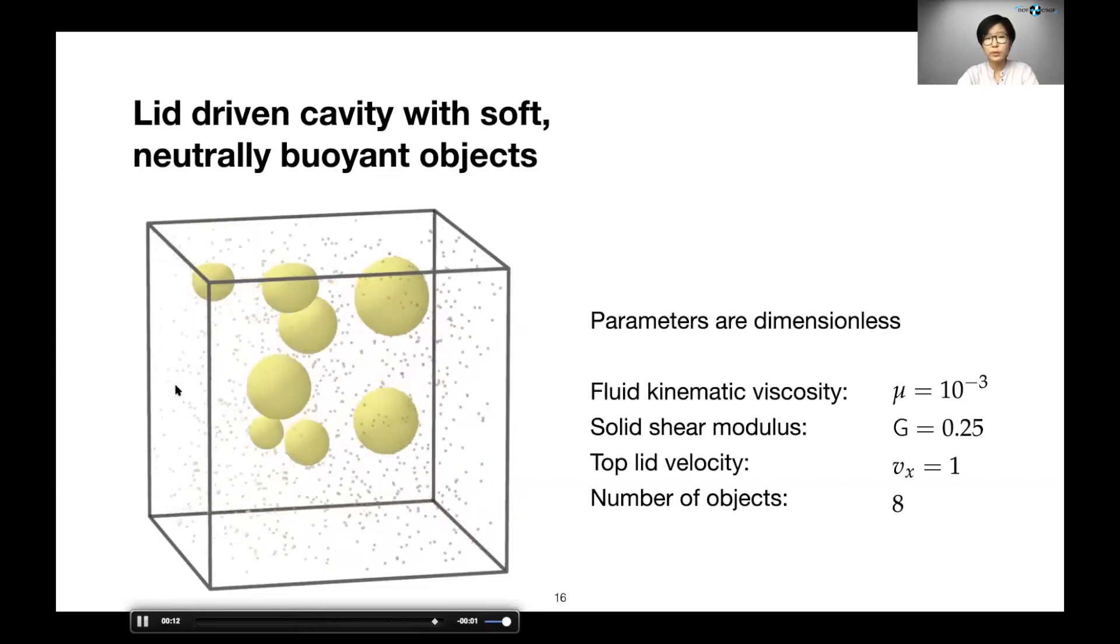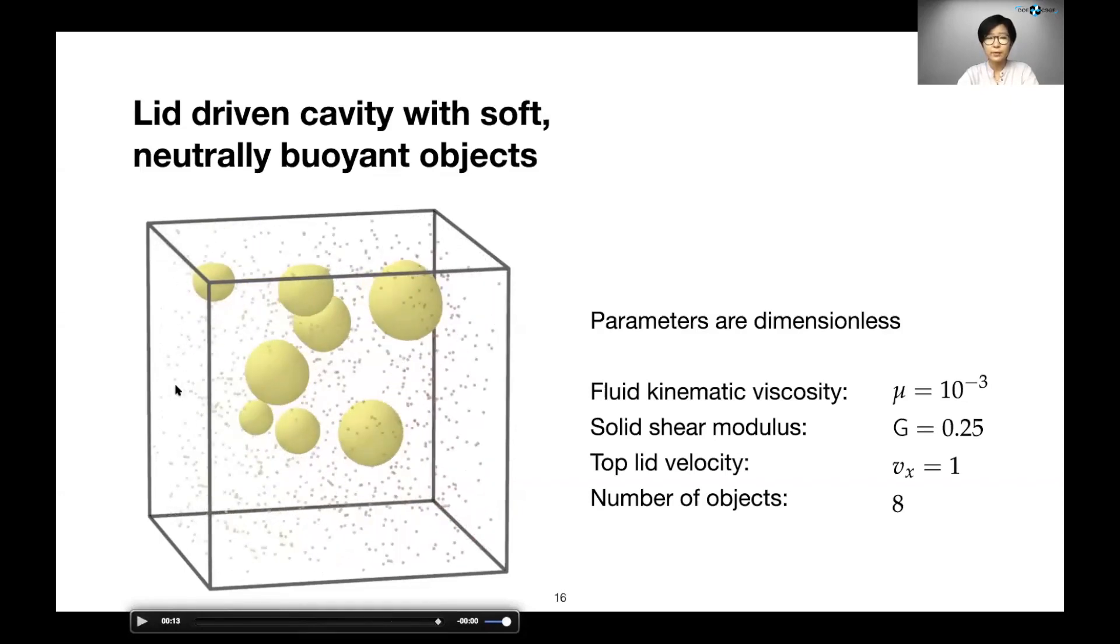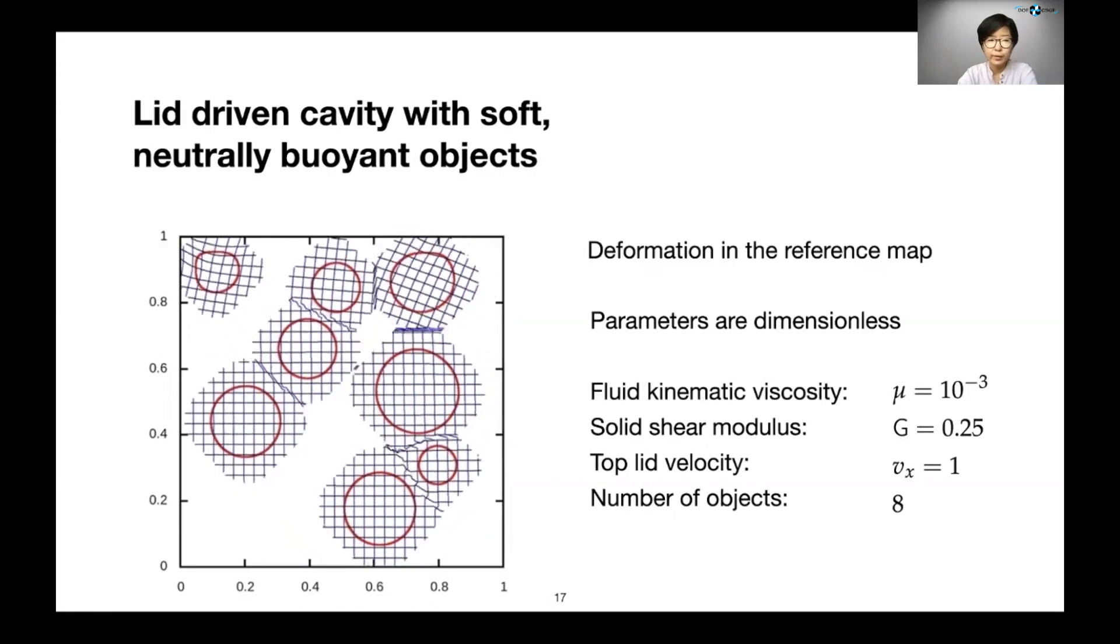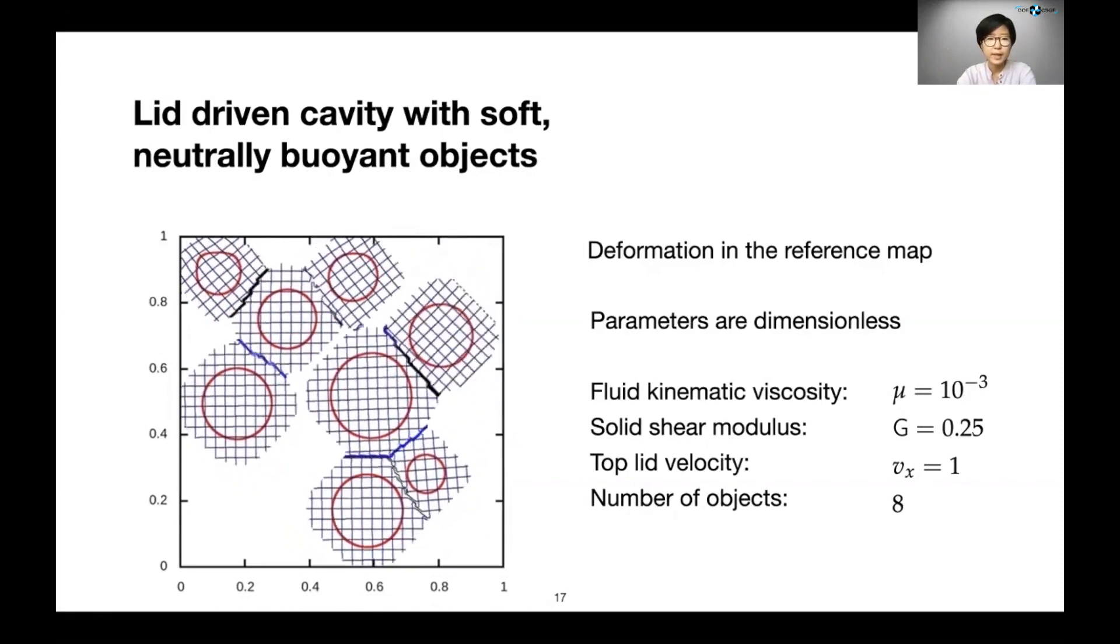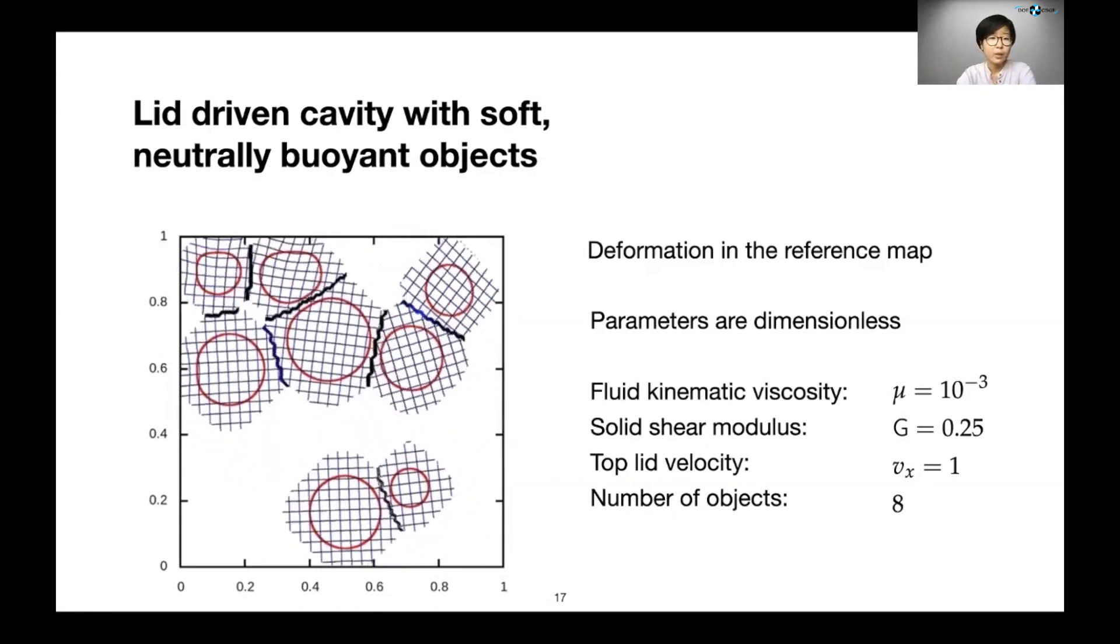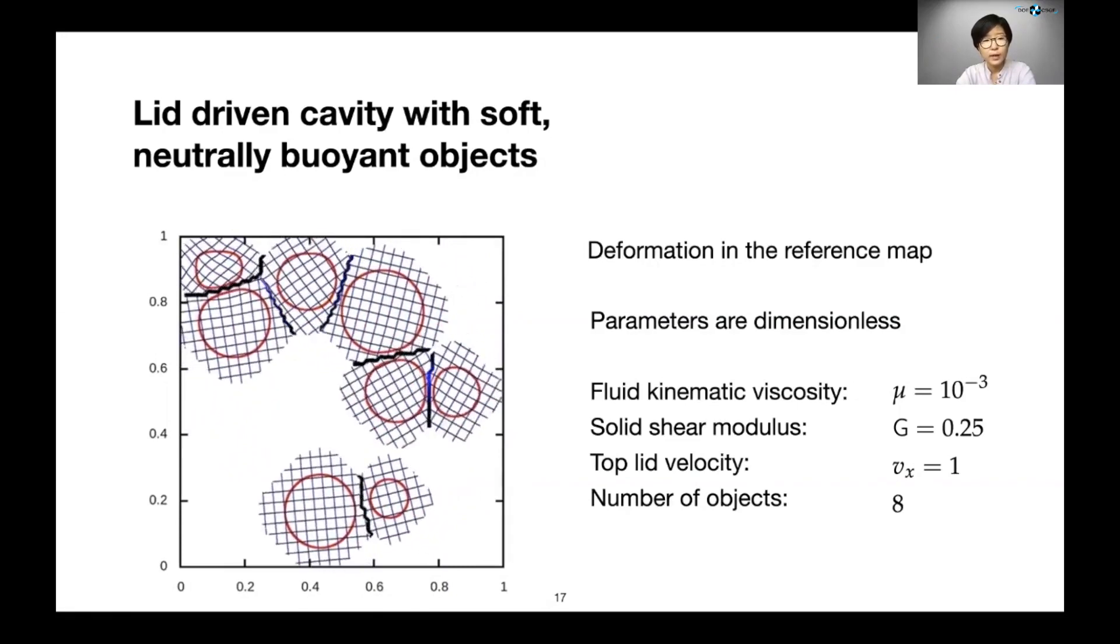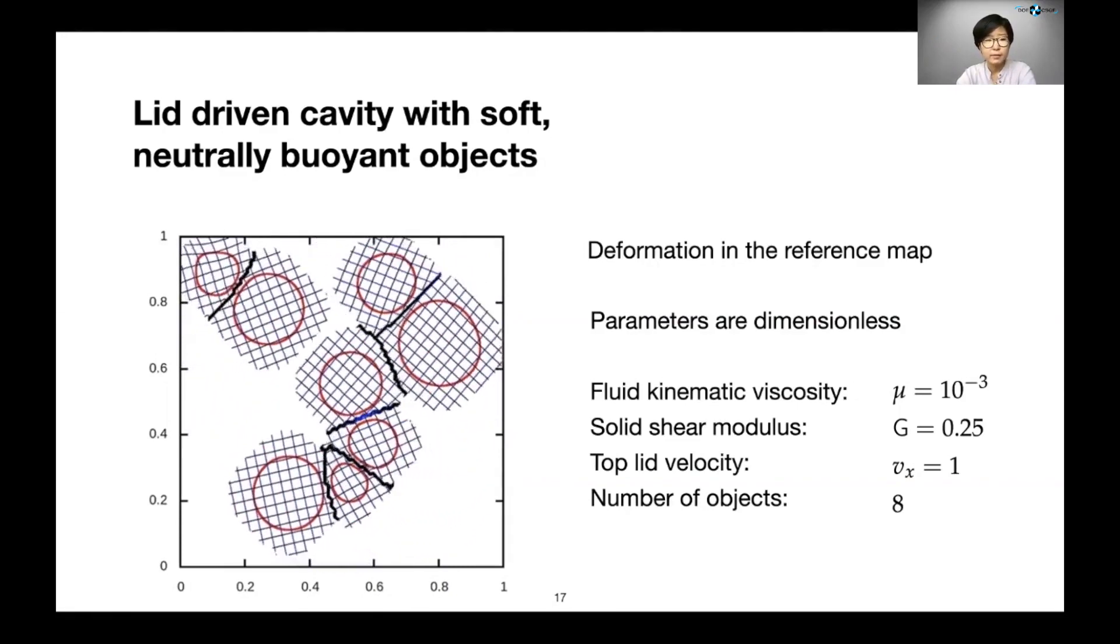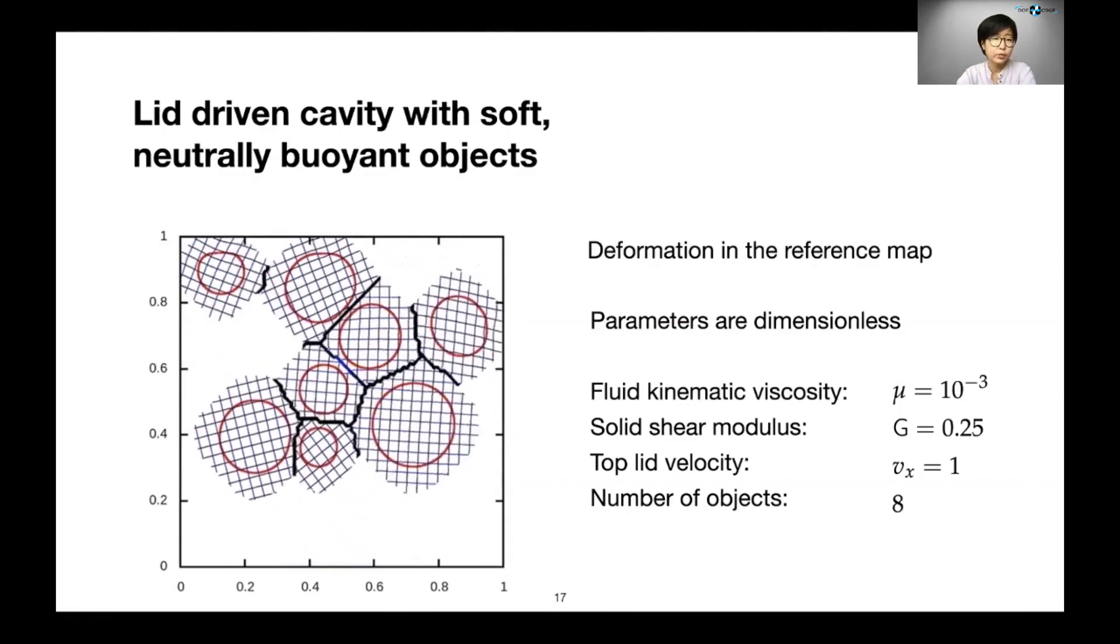An interesting thing that happened here is the sphere on the top left corner that seems to have gotten stuck. It may not seem to be doing much, however, if we look at the reference map in a 2D slice in the middle of the domain, we can see that this ball that appeared to be stuck is in fact rotating in place due to the flow on top.